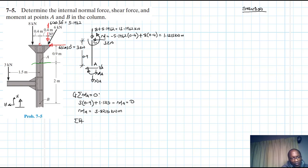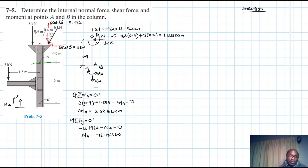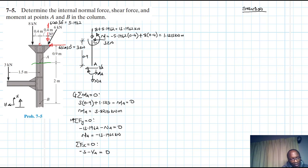For the summation of forces in the y-direction equal to zero: minus 13.1962 minus NA = 0, so NA = minus 13.1962 kN. The negative sign indicates that this portion of the section is in compression. For the summation of forces in the x-direction equal to zero: minus 3 minus VA = 0, therefore VA = 3 kN.